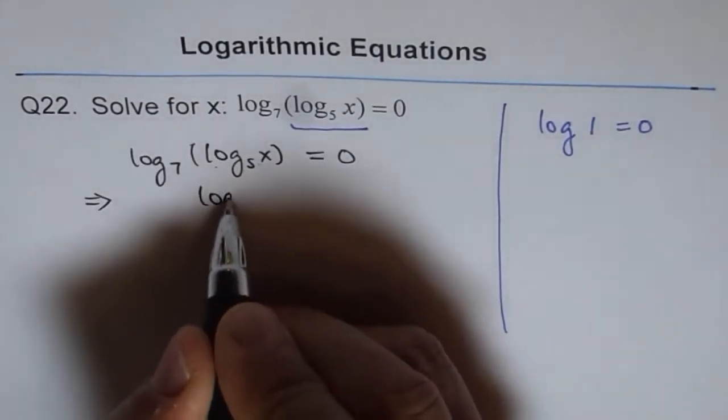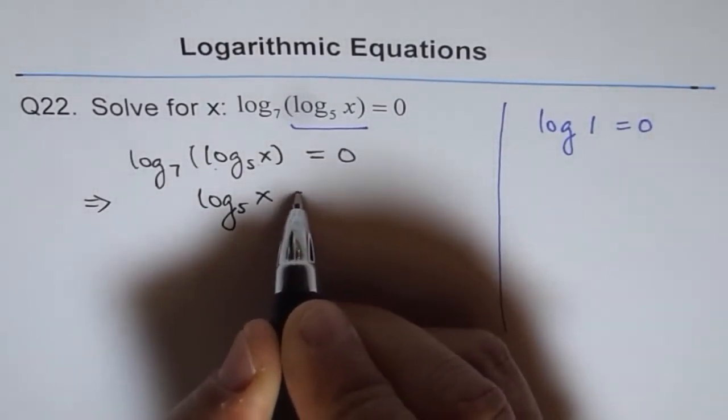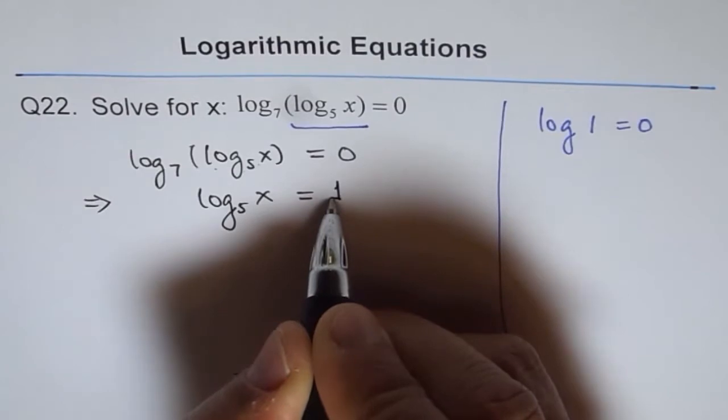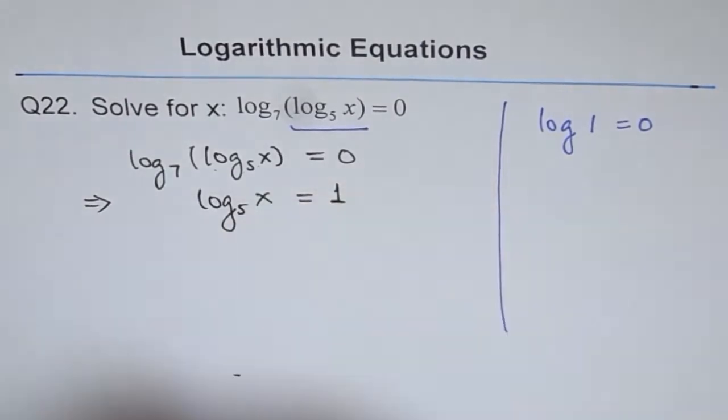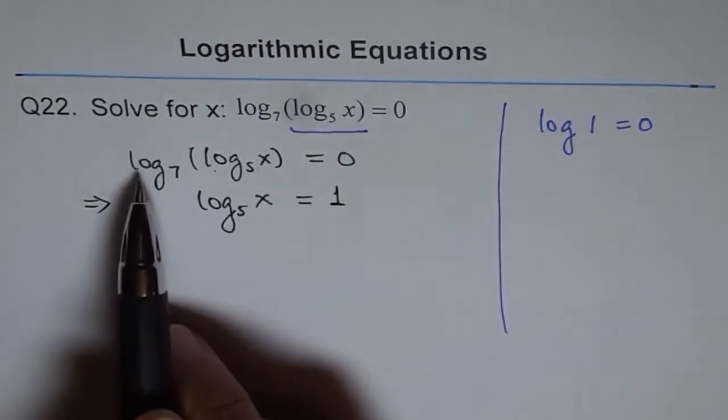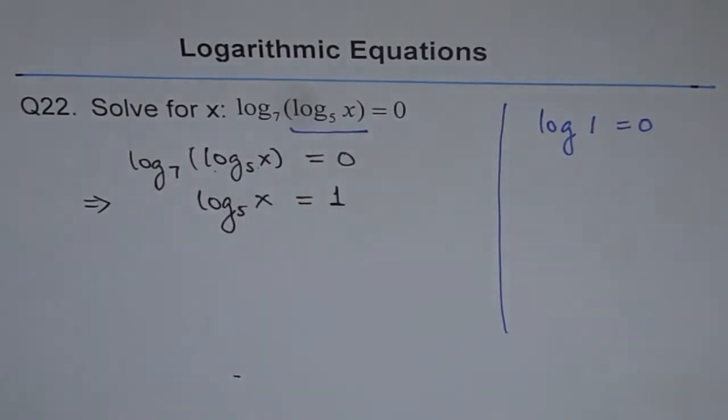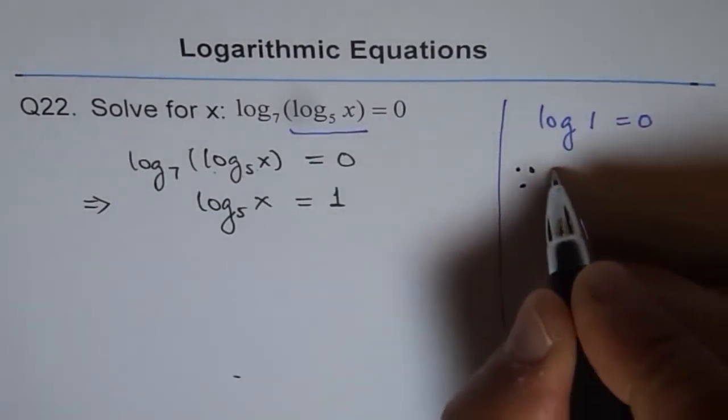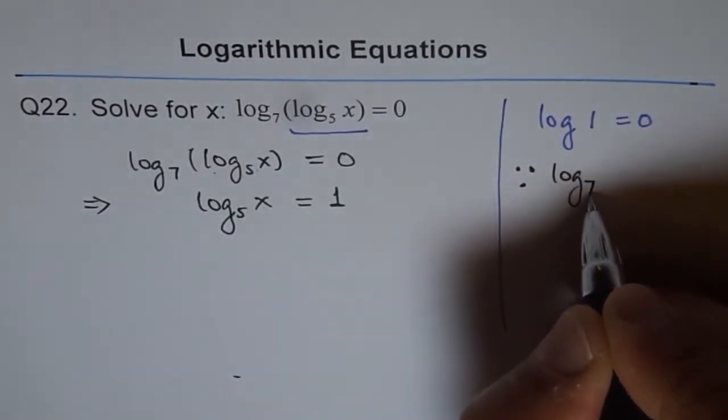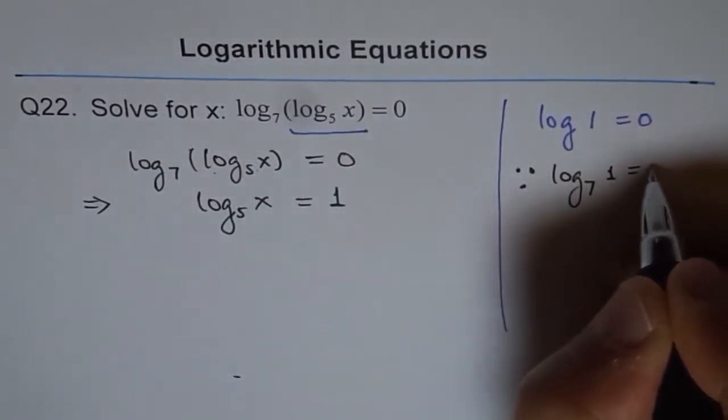This implies that log base 5 of x equals 1, because only log base 7 of 1 equals 0. It is because log to the base 7 of 1 equals 0.